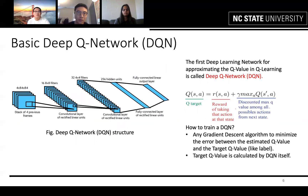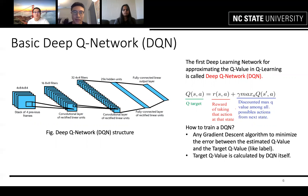Now we will introduce the deep learning models used for approximating the Q value. For training the DQN, we leverage a gradient descent algorithm to minimize the error between the estimated Q value and the target Q value. You can think of the target Q value as a label, but this label is created by the network itself instead of being given by labeled data.